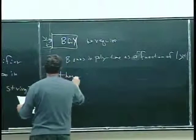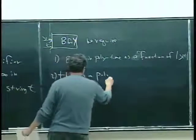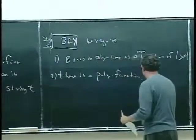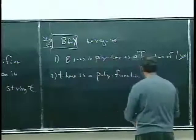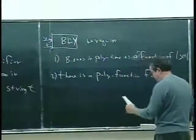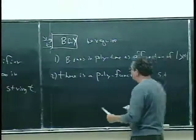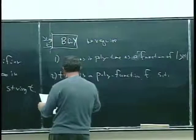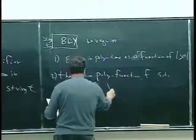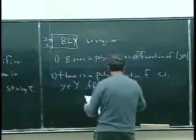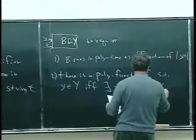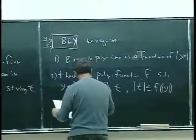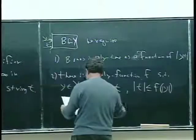And two: there is a polynomial function f such that little y is in capital Y if and only if there exists a t where the size of t is less than or equal to f of the size of y, and B on input y and t equals yes.